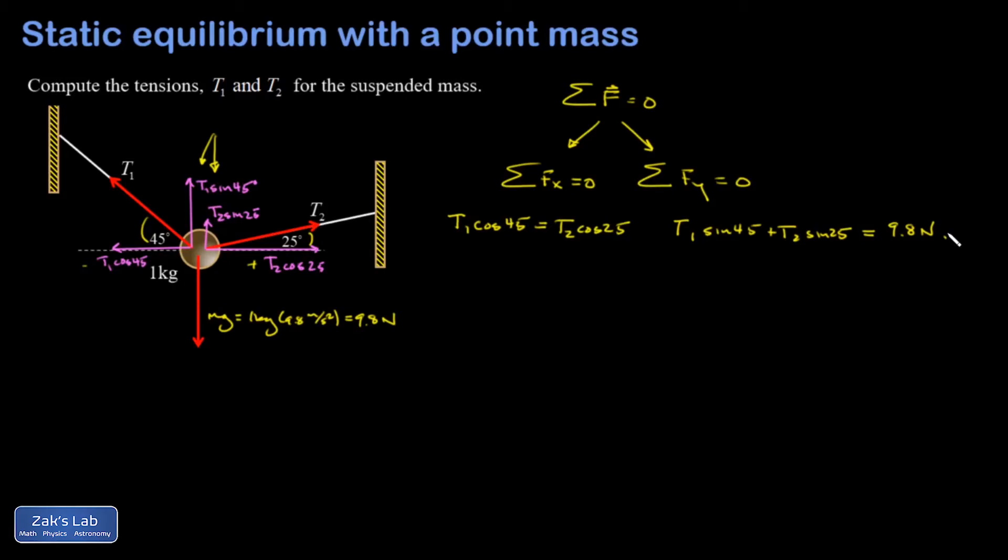What I'm going to do is take this first equation, the x equation, and solve for T2. So I'm taking a substitution approach here. That's T1 times cosine 45 over cosine 25, and I'm going to move to decimal approximations at this point. So I have 0.780 when I evaluate those cosines.